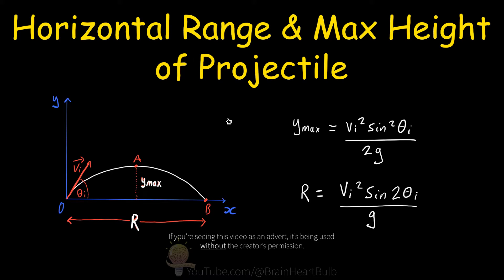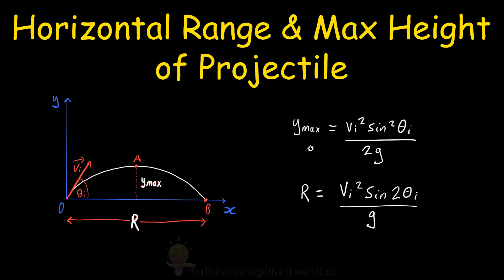In this lesson, we're going to focus on projectile motion in two dimensions, and we're going to derive these two equations here. The first one gives us the maximum height of a projectile during its flight time, where v is the speed of the projectile, theta is the angle to the horizontal, and g is the acceleration due to gravity. This equation down here gives us the range of the projectile.